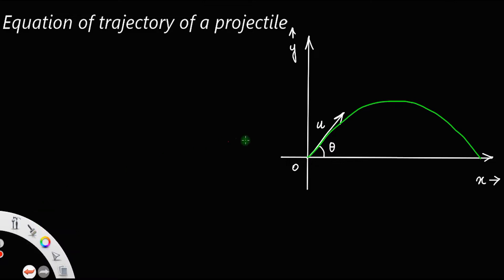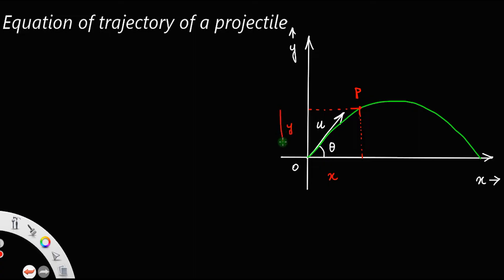Now, let us take any point P on the path of the projectile. If you draw two perpendiculars from point P to the x and y axes, this is the horizontal distance covered by the projectile x, and this is the vertical distance covered by the projectile y.